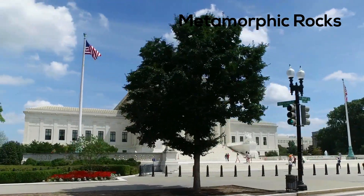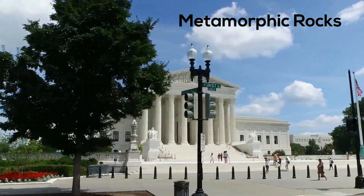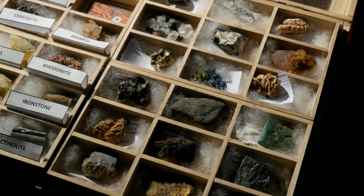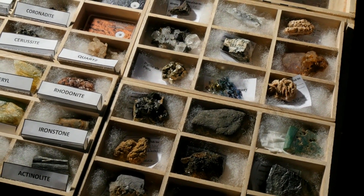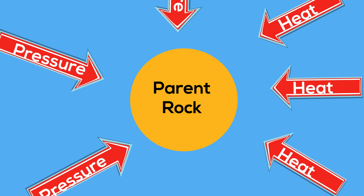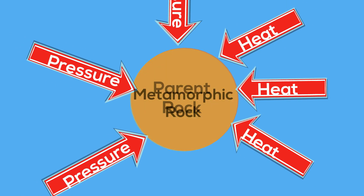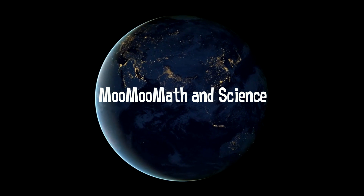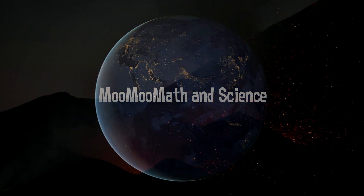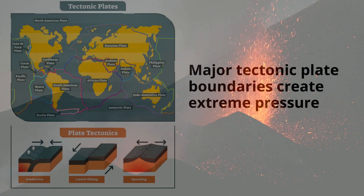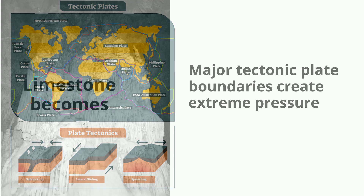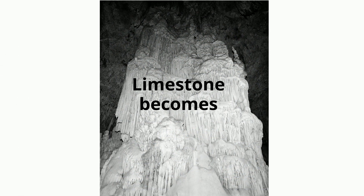This classic building contains a metamorphic rock called marble. Rocks are classified by how they are formed. Metamorphic rocks come from existing rocks that are subjected to extreme heat and pressure. Welcome to Moo Moo Math and Science and Metamorphic Rocks. Metamorphic rocks are created when extreme heat and pressure changes the original rock into a new type of rock.